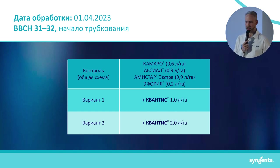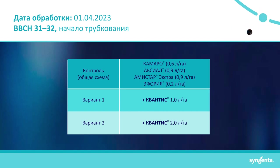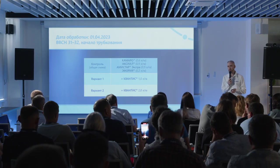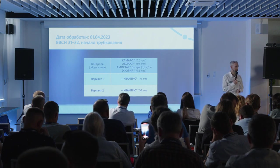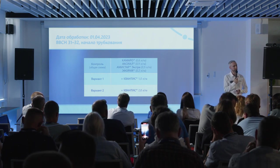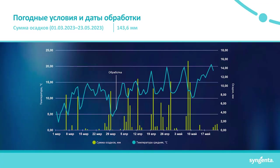On experimental variants, two different application rates of Kvantis were used: 1 liter and 2 liters per hectare. We needed to check: would there be a phytotoxic effect from the herbicide or fungicide, would herbicide activity be reduced by joint application with the biostimulant in a tank mix, and would there be any difference in overall crop development — what is the point of applying this biostimulant at all?